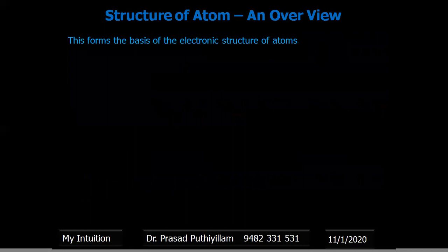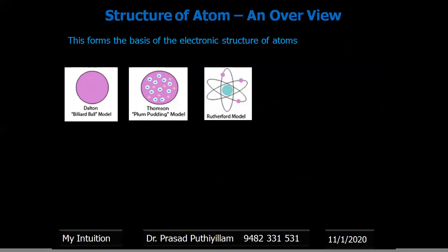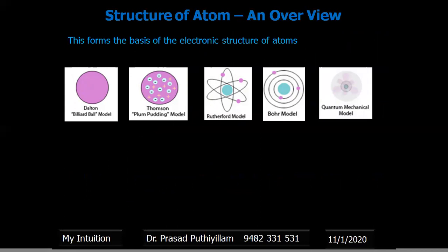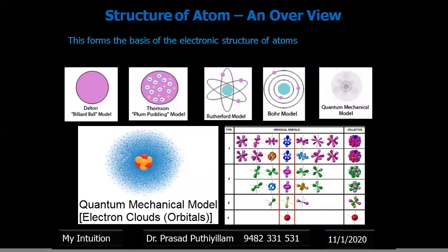So all these form the basis of the electronic structure of the atom — from Dalton's model, Thomson's model, Rutherford's model, and Bohr's model, to the quantum mechanical model by Schrödinger. The quantum mechanical model describes an electron cloud of orbitals having different shapes for the S, P, D, and F subshells.